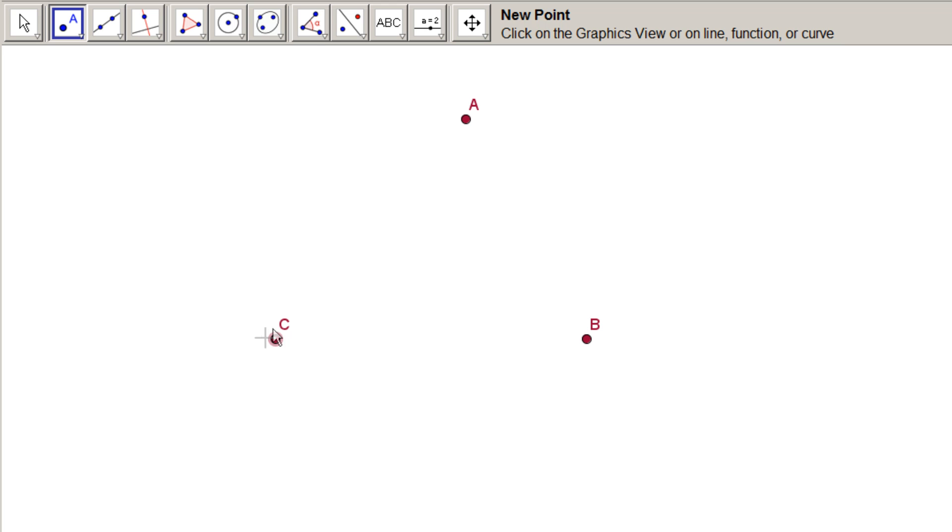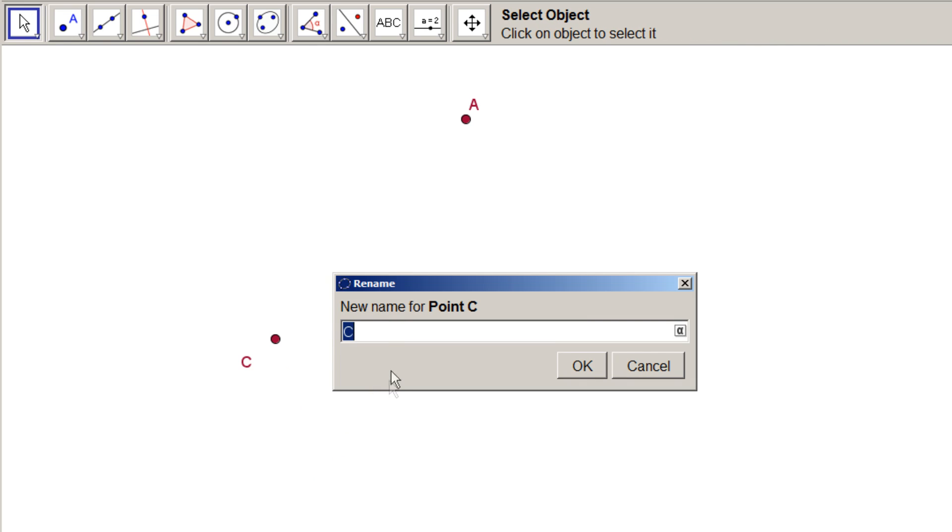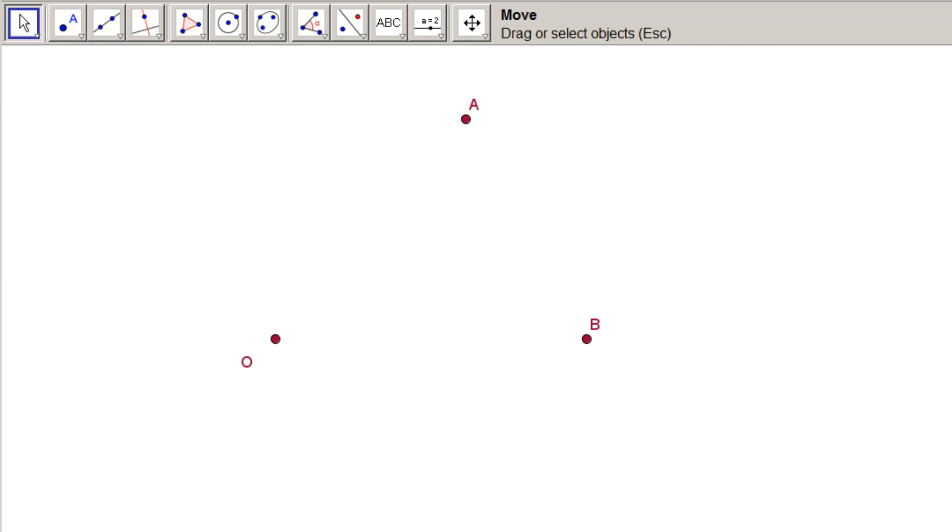Clicking on the second icon along called New Point, we click around the area to make three individual points. They come up pre-named as A, B, and C. So the first thing to do is to change the C to an O. To do this, we run the mouse over the letter C and right-click. From the drop-down menu, choose Rename. A dialog box opens. In the text input, delete the C and write capital O. Then click OK. Now we have three points, A, O, and B.